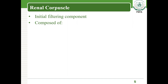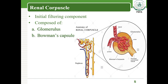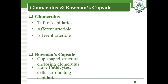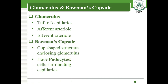Each nephron is divided into the renal corpuscle and renal tubules. The renal corpuscle is that part of the nephron composed of the glomerulus and Bowman's capsule. It is the initial filtering component of the nephron, responsible for removing waste, excess, and toxic material from the blood to produce primary urine.